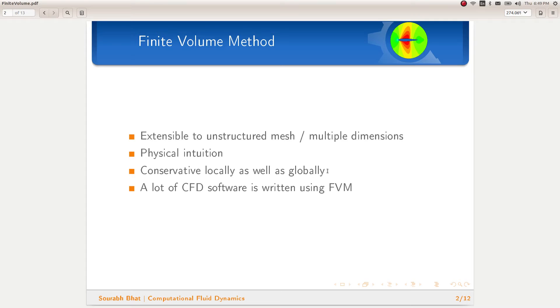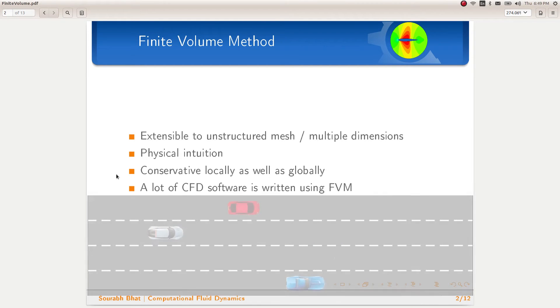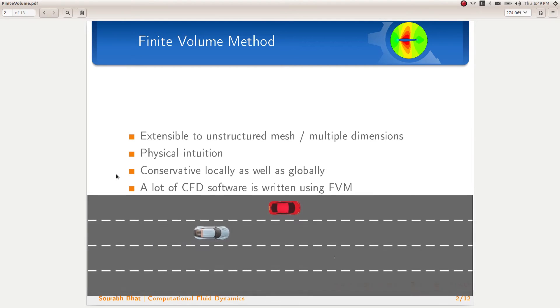Looking at the previous example again, it would be spooky if vehicles start appearing or disappearing from the road included. The finite volume method ensures that such a thing does not happen in simulations.